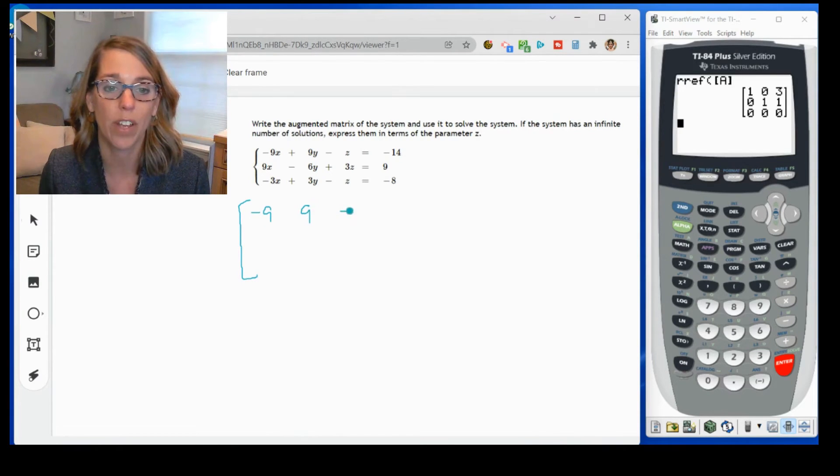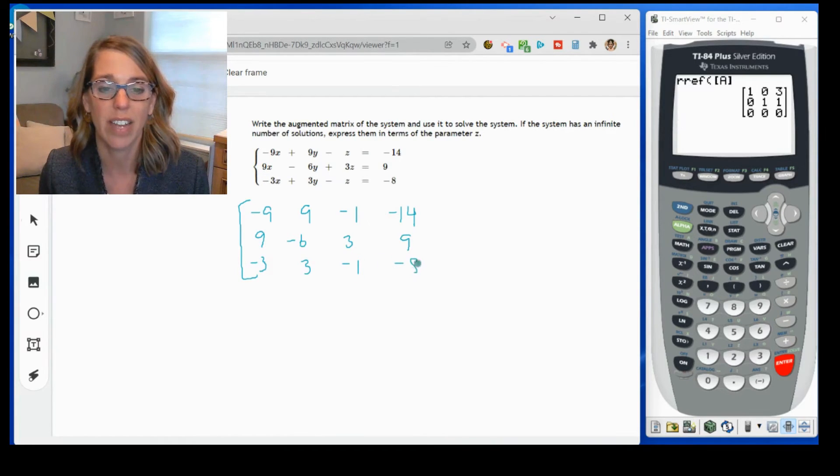So across the first equation, I've got these coefficients. The next equation, I've got a 9, a negative 6, a 3, and then a 9. And then the last equation, a negative 3, a 3, a negative 1, and a negative 8. We call this an augmented matrix because it's augmented with the constants on the other side of the equation.